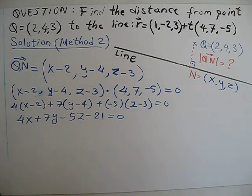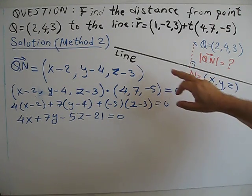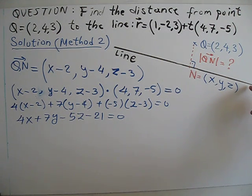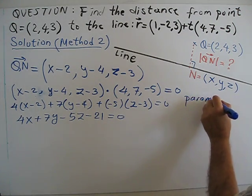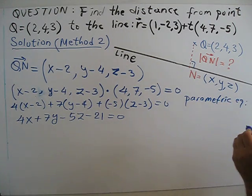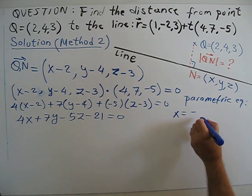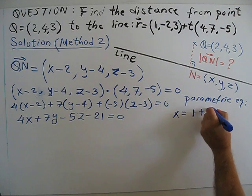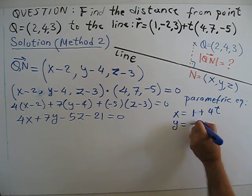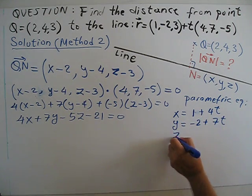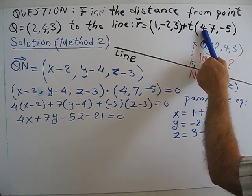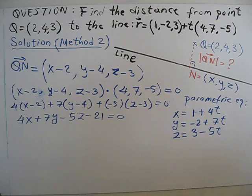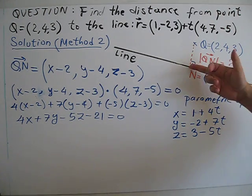How can I find x, y, z? But this point N lies on this line. So what I do: I write the parametric equation, which will be easier. The parametric equations of this line are: x will be 1 plus 4t, y will be minus 2 plus 7t, z will be 3 minus 5t. Since this point lies on the line, I substitute these values into the equation.